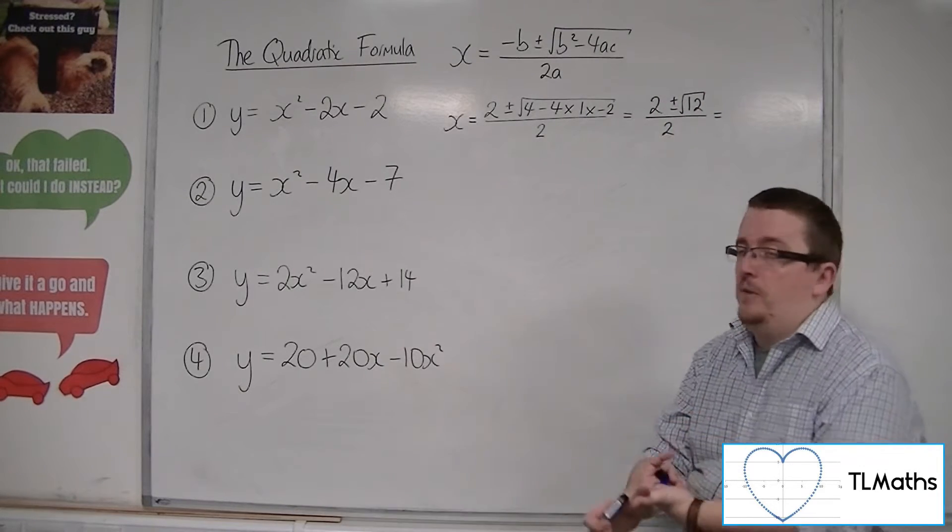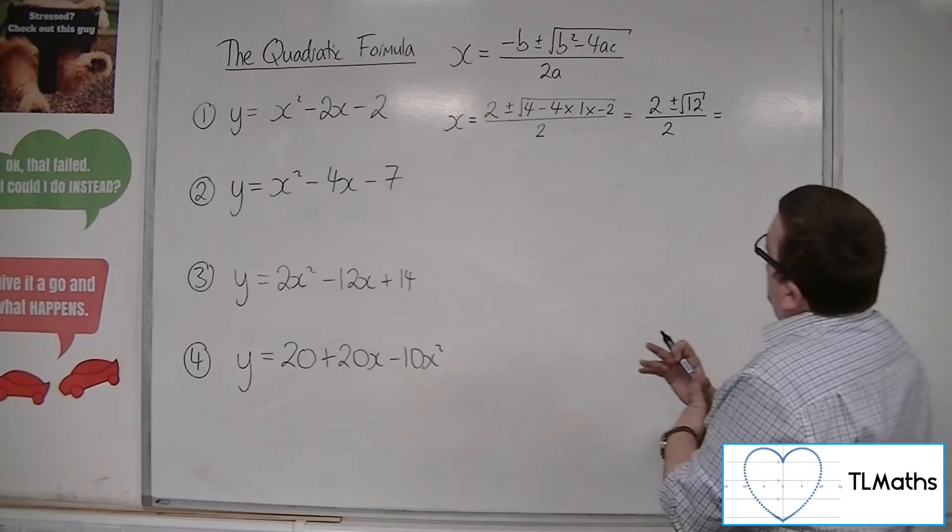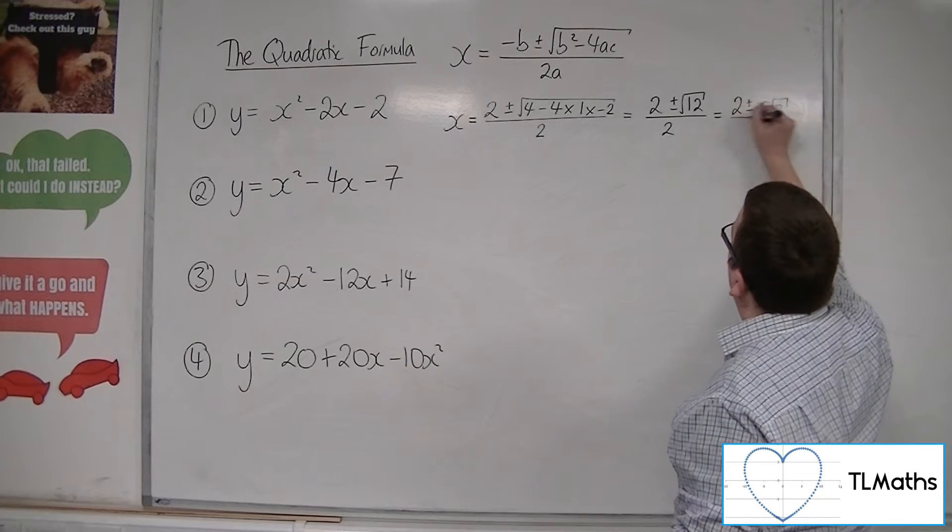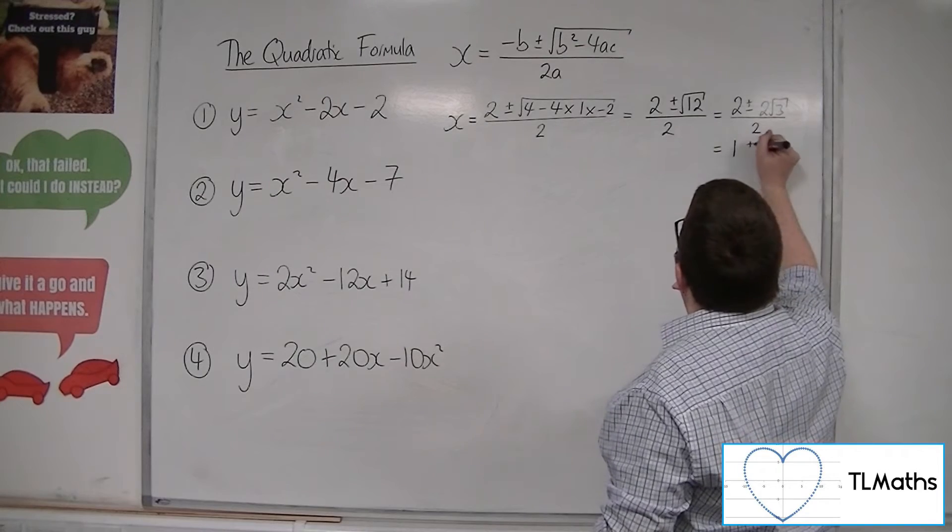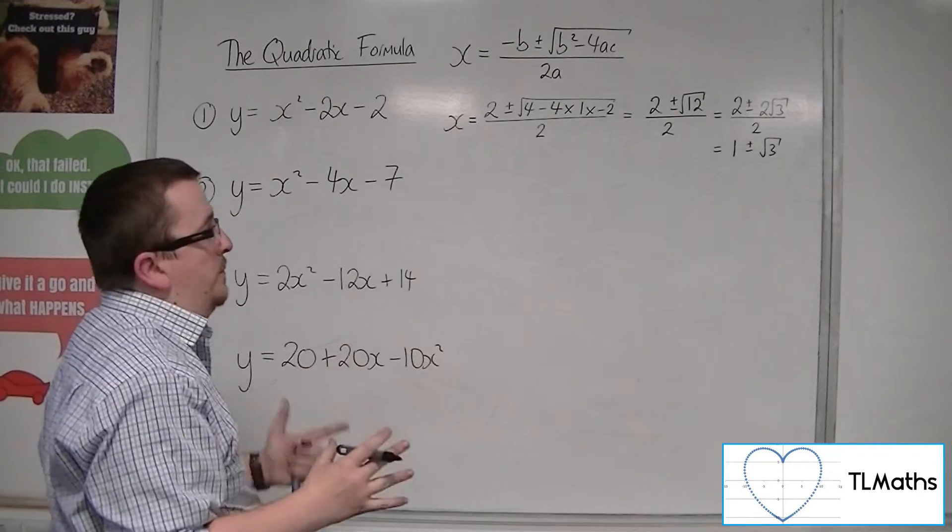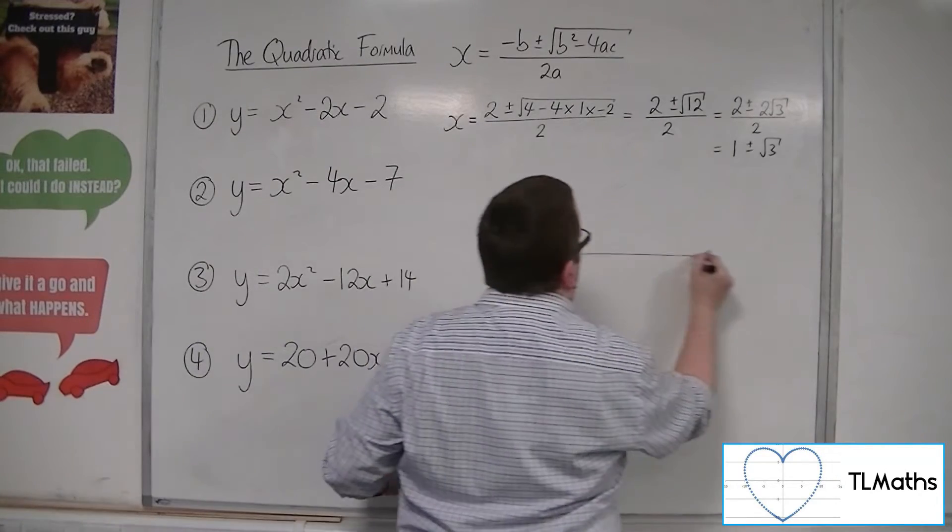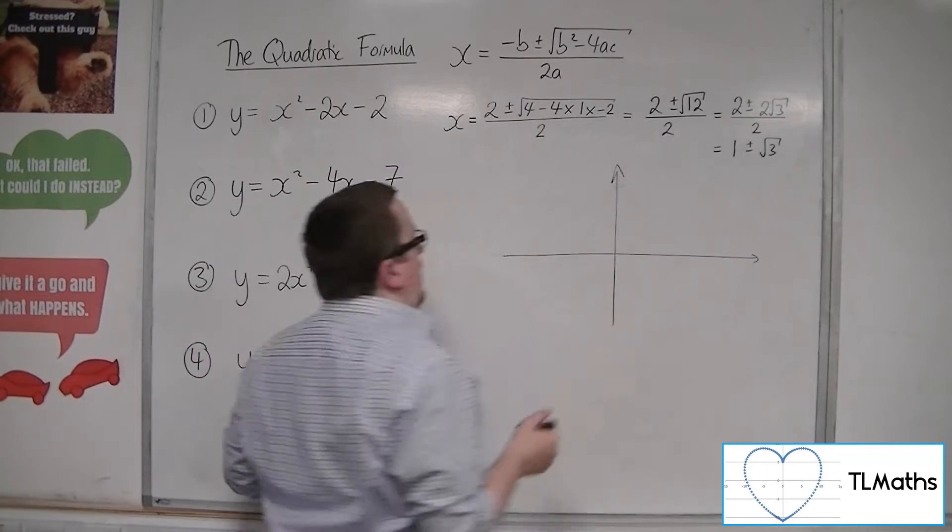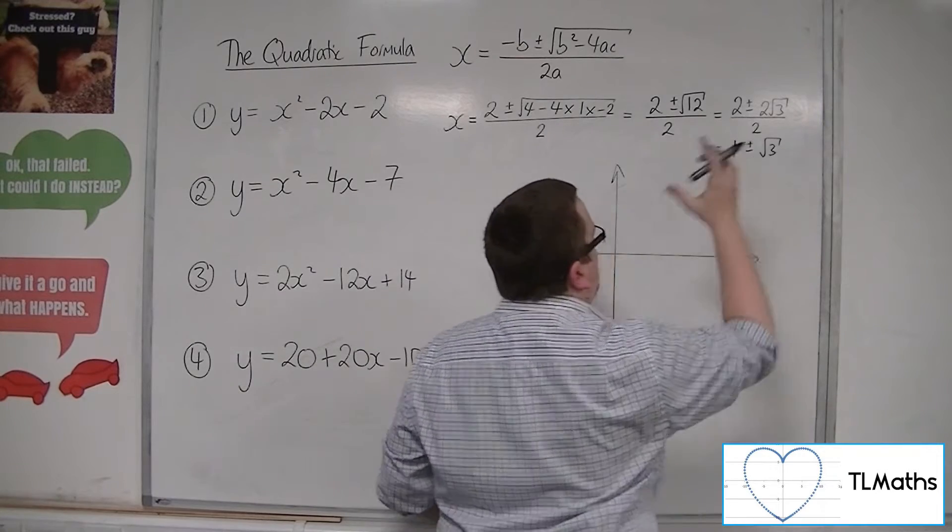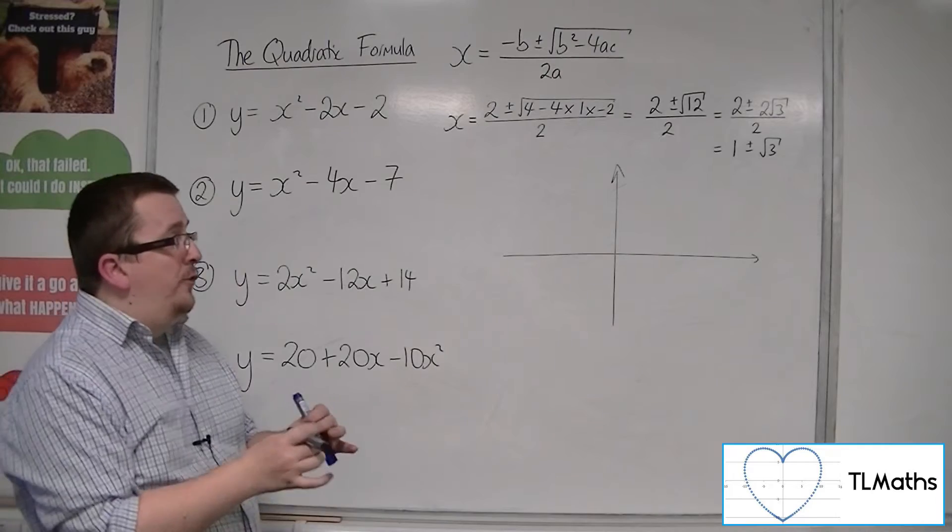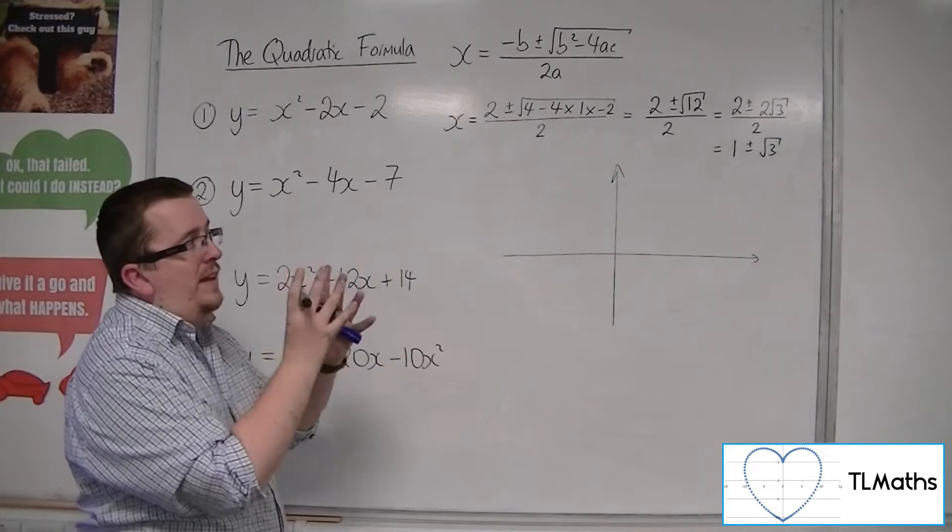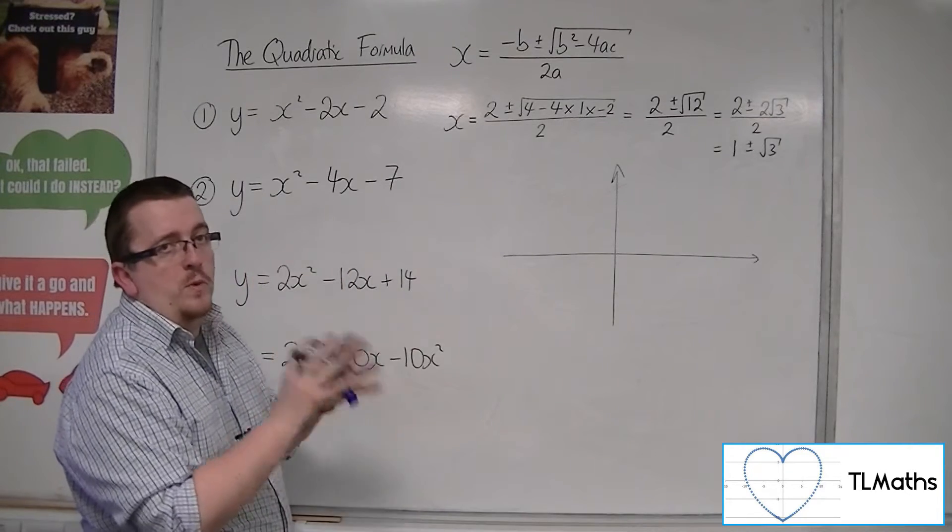Now root 12 can be simplified. So root 12 is 2 root 3, so 2 plus or minus 2 root 3 over 2, which is 1 plus or minus root 3 if you divide through by the 2. So what that's telling me is that this parabola crosses the x-axis at 1 plus root 3 and 1 minus root 3.